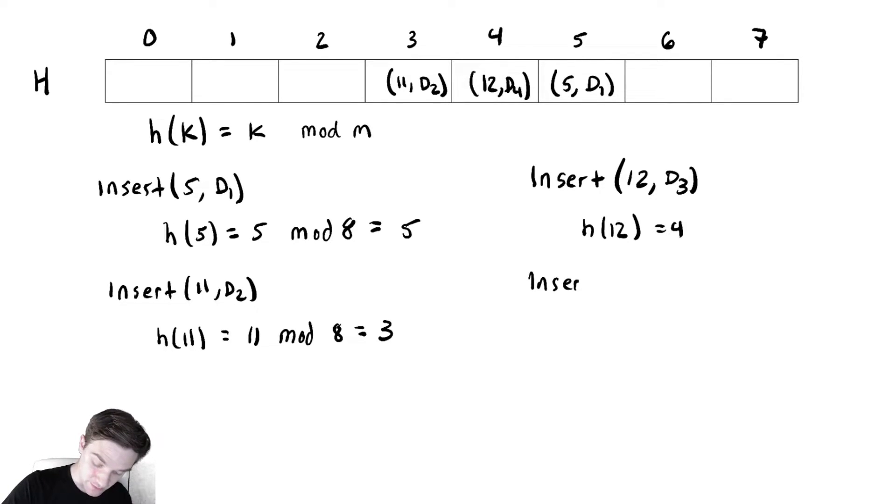Now suppose we did insert 21, d4. h of 21 is 21 mod 8. The modulus when I divide 21 by 8 is 5. So I get—oh no, something bad happens. Because now what I want to do is write 21 comma d4 in the same location as 5. So this means my hash table broke, right? Not quite actually. We have ways of dealing with this. We call this a collision, and there are potential ways to resolve this.